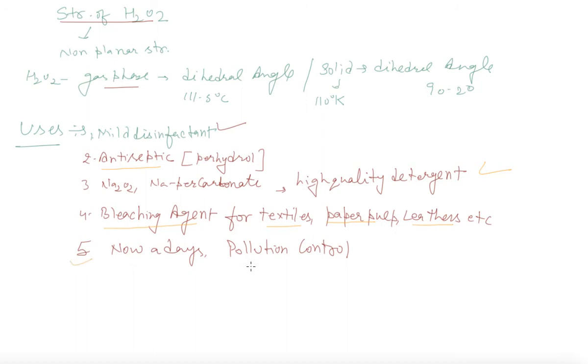Nowadays, it is used in pollution control. Important in environmental chemistry - pollution control treatment of domestic sewage, industrial effluence, oxidation of cyanides, restoration of aerobic conditions of sewage waste.